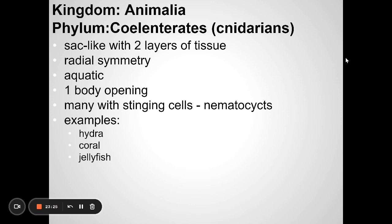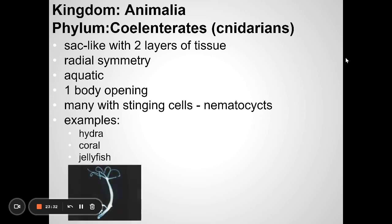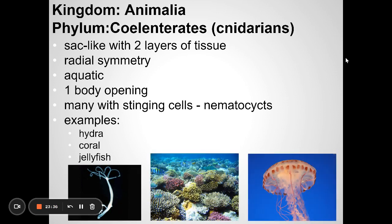Cnidarians are animals with radial symmetry and often with stinging cells. Jellyfish are familiar examples — they have tiny harpoons they launch into your skin, which causes pain. Coral is another example, as is the sea anemone. Some types of coral have stinging cells. Clownfish are actually immune to the anemone's stinging cells, so they can hide in the anemone — and it doesn't affect them.